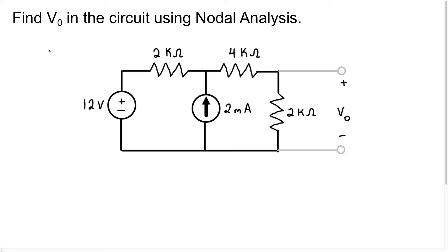In this video, we want to find VO in the circuit using node voltage analysis. VO is going to be the voltage at these two terminals, which is also the voltage across this 2K resistor. So VO is the voltage across this 2K resistor here.